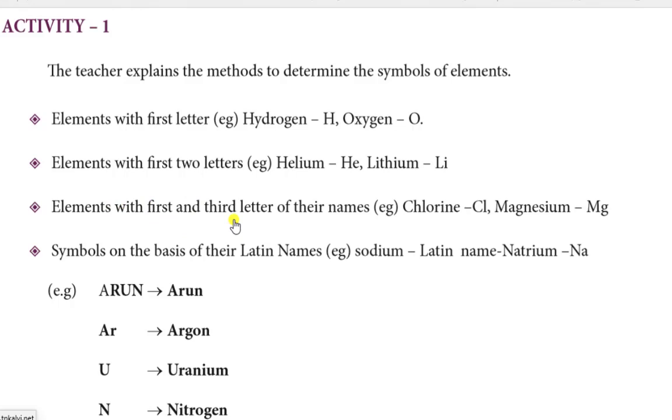Now, the first and third letter of their English name. That is chlorine - C, L. Magnesium is Mg. Now, the element symbol is based on the Latin name. Sodium's Latin name gives the symbol Na.